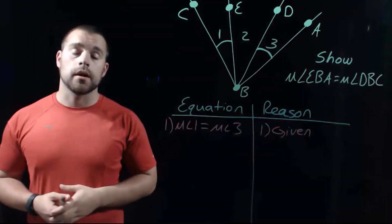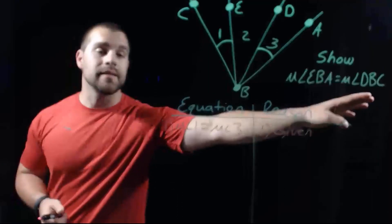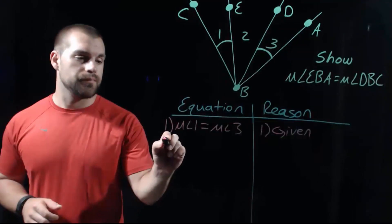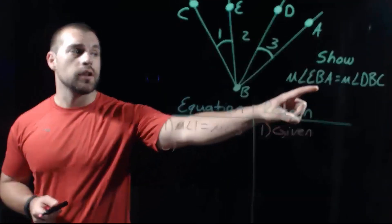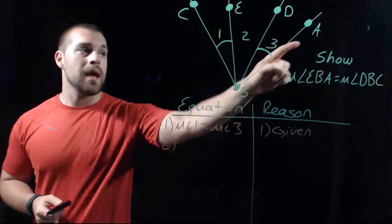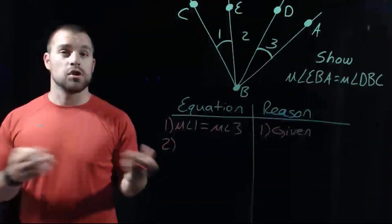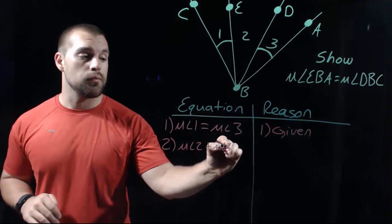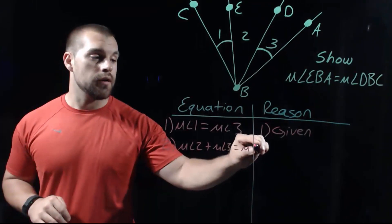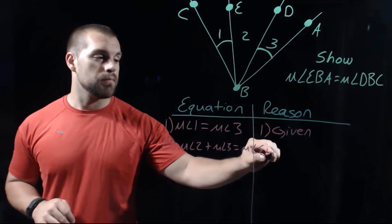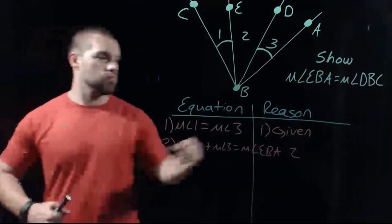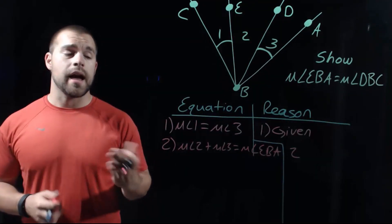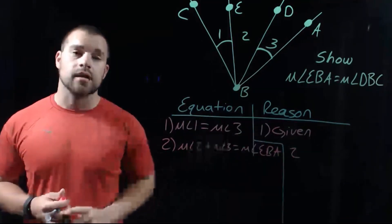We're building towards the bigger angles EBA and DBC, so let's look at the smaller pieces that make up each one. Angle EBA is made up of two small angles: angle 2 and angle 3. So we can say the measure of angle 2 plus the measure of angle 3 equals the measure of angle EBA. Our reason is the angle addition postulate — we take two small angles, add them together, and get a bigger angle.